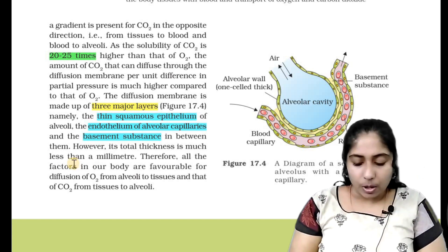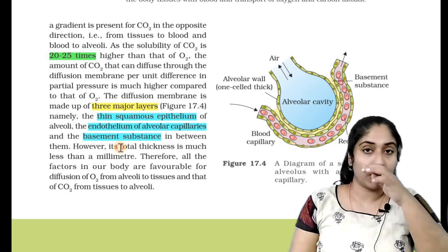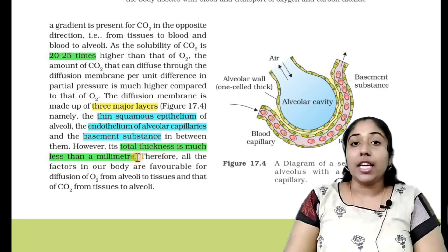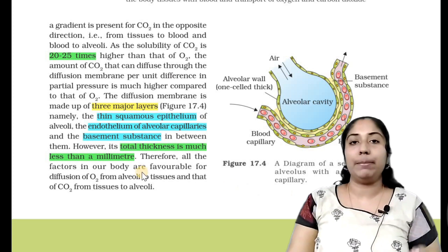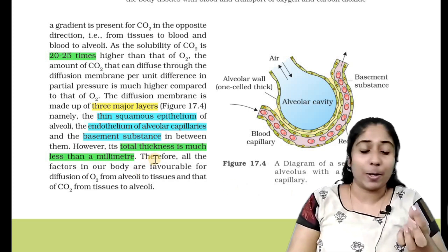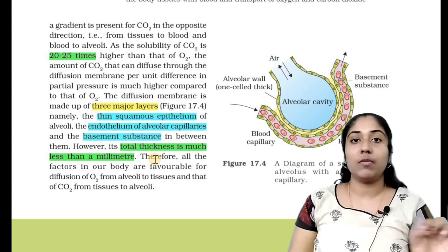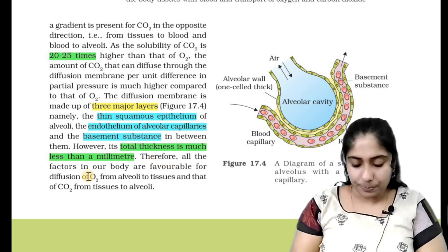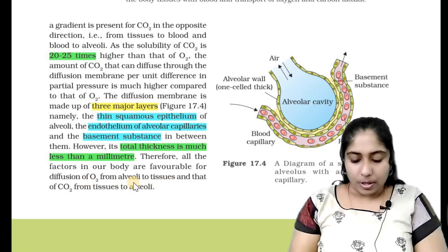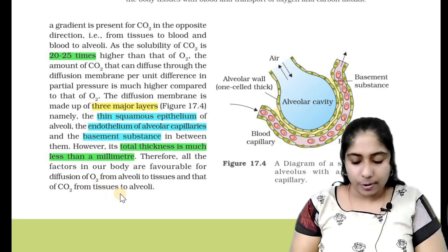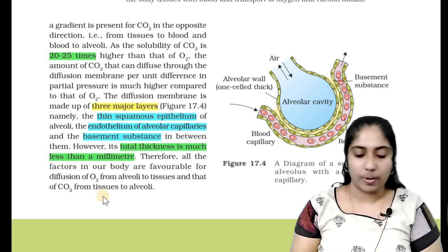The total thickness of the diffusion membrane is much less than 1 mm. If you learn the three layers, the total thickness is less than 1 mm. It is very difficult to measure how much it is, so it is marked as less than 1 mm. Therefore, all the factors in our body are favorable for diffusion of oxygen from alveoli to tissues and carbon dioxide from tissues to alveoli.